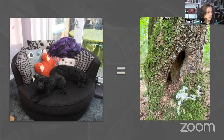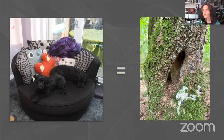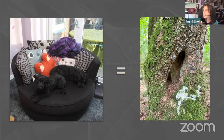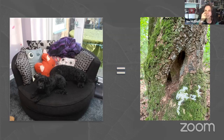Some chairs are more crucial than others. If we lost the sofa in the lounge, that would be absolutely devastating. But I've got five outdoor chairs for the summer — if I lost one of those, it's probably not going to be a big deal. The same principle applies to tree roosts: some are far more significant than others.